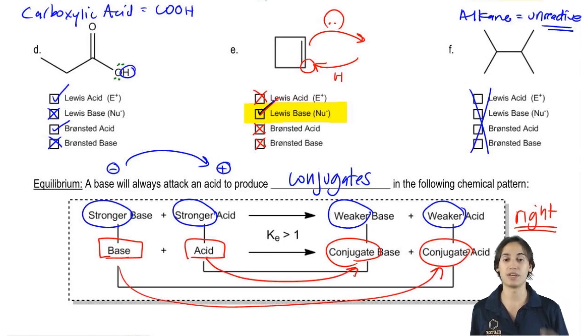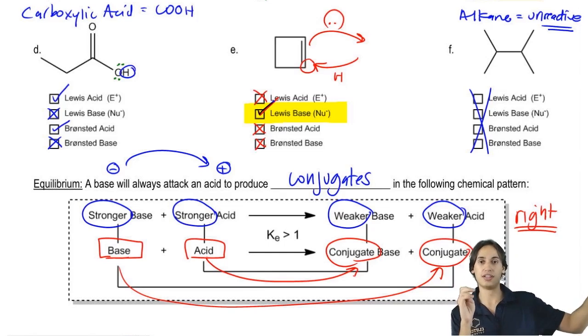So what that means is that my base is always going to turn into a conjugate acid and my acid is always going to turn into a conjugate base. I know that's a little bit confusing and a lot of people mix that up, but that's just something you have to remember. Your base is going to turn into a weaker acid and your acid is going to turn into a weaker base.